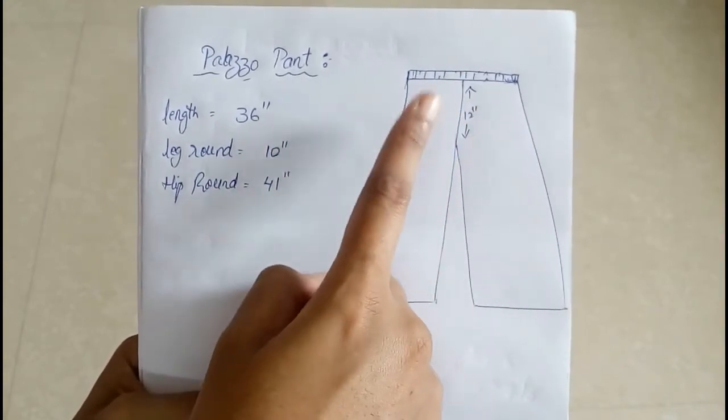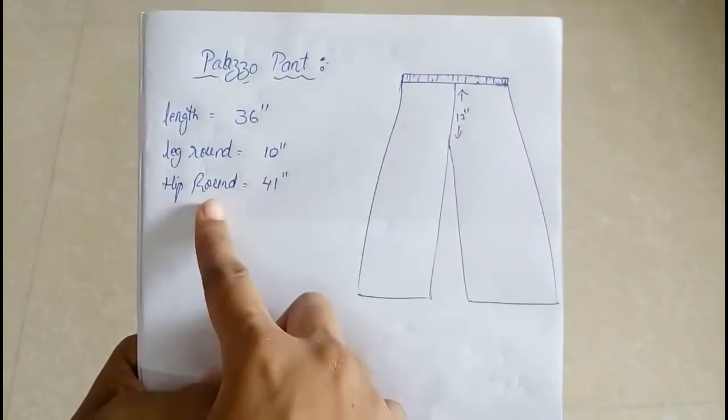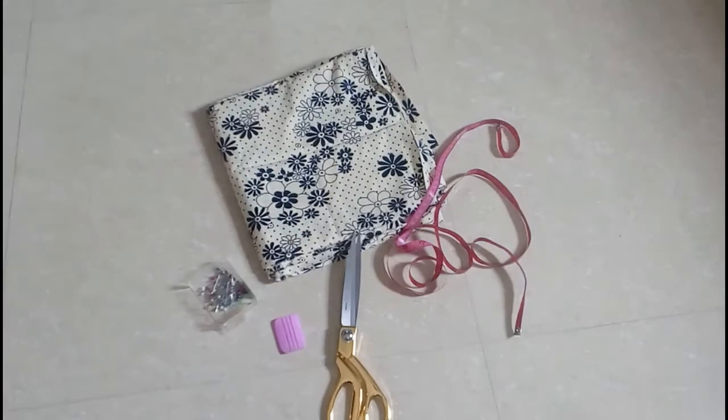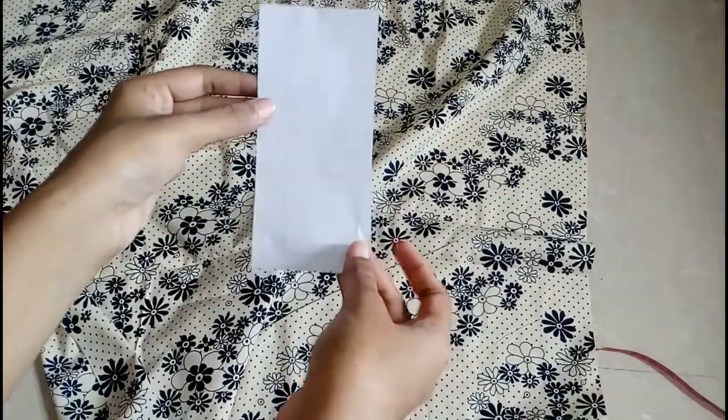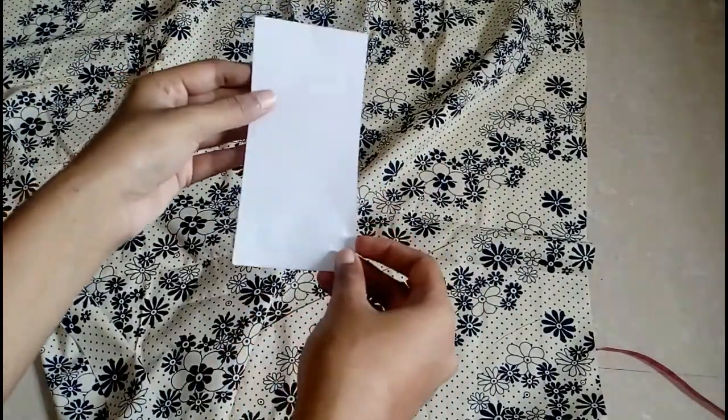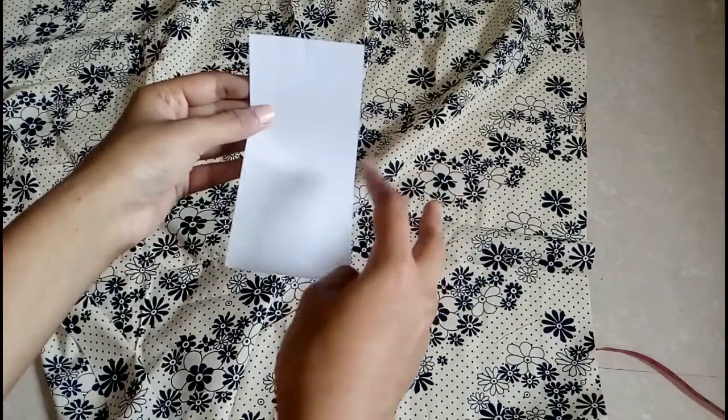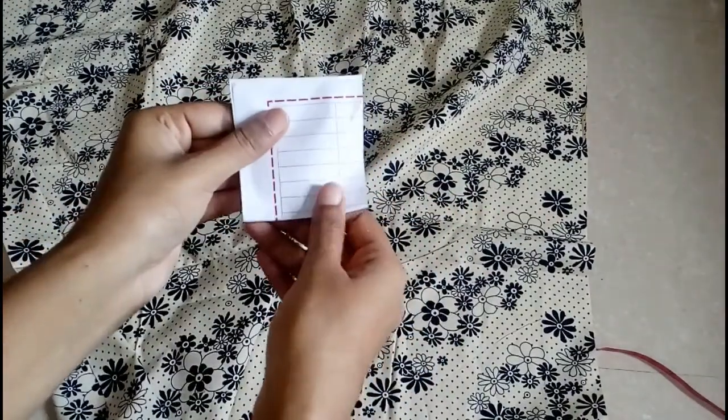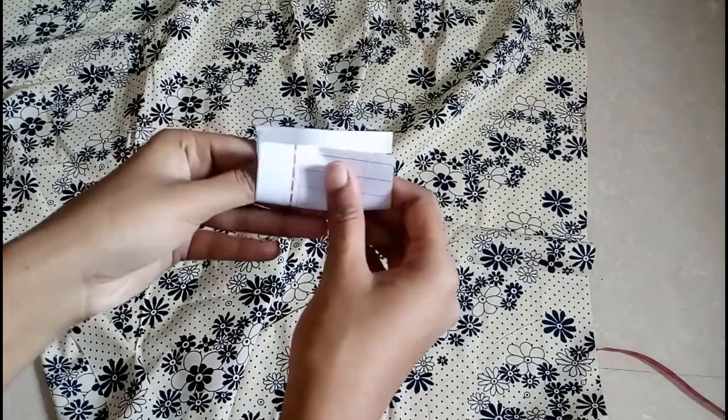That is the fullest part of your body. So to make palazzo pants we need two meters of cloth. Let's get started. This is your whole material. You have to fold it for two times, like once like this and again like this.